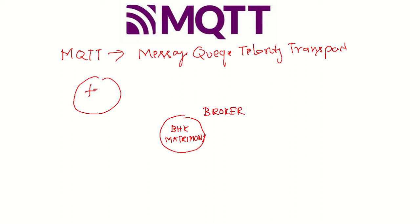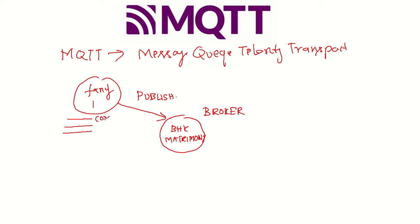You have Family 1. On the BHK Matrimony website, Family 1 can publish their details. They can publish details on a community basis, financial status, and educational qualifications — three different items to publish.